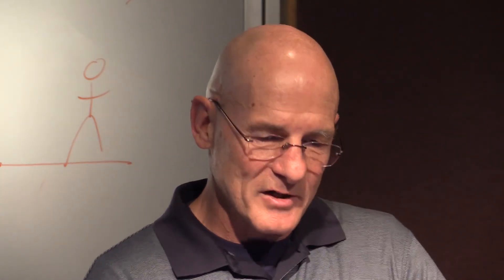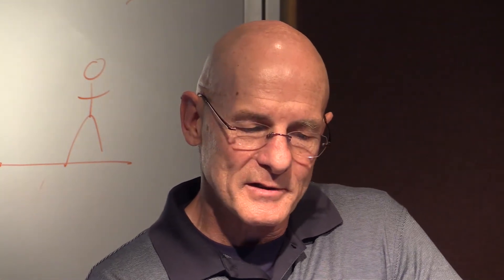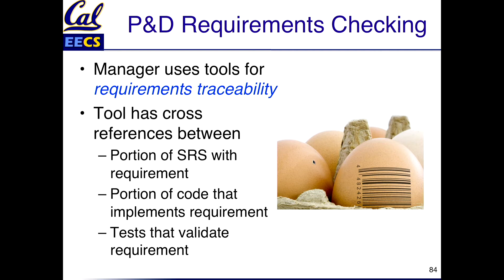But you're not done as project manager — does it actually do what the customer asked? This is called requirements traceability. Tools are developed to tie all the pieces together: the software requirements spec, the piece of code that implements it, and the test that validates it. With these tools you can ask: did we really implement everything the customer asked? If the test is passing, it's handling that piece of the requirement. So all pieces of the hundreds-of-pages document are covered with tests and corresponding code in the SRS.